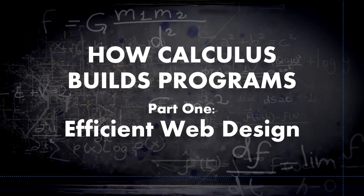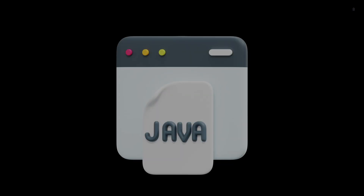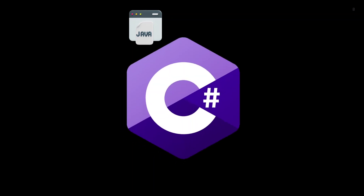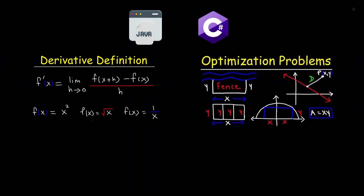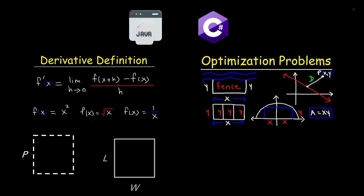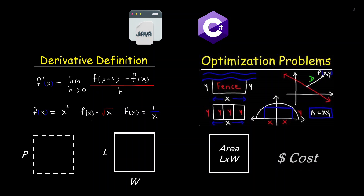Part one: efficient web design. Software engineers try maximizing the number of products that they can fit dynamically onto a user's screen, similar in use case to other related fields such as computer science and game development. Software engineers use the calculus method of derivatives in solving optimization problems. In this case, using the properties of perimeter length, side length, area, and cost, software engineers maximize the amount of products being displayed with maximum profit.